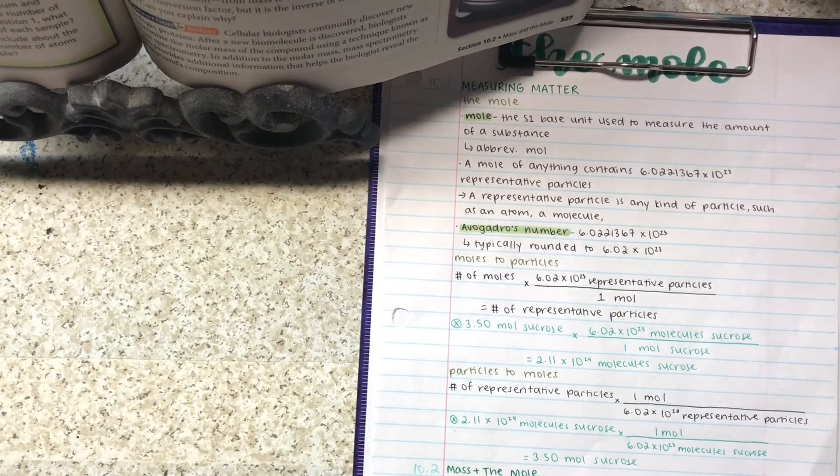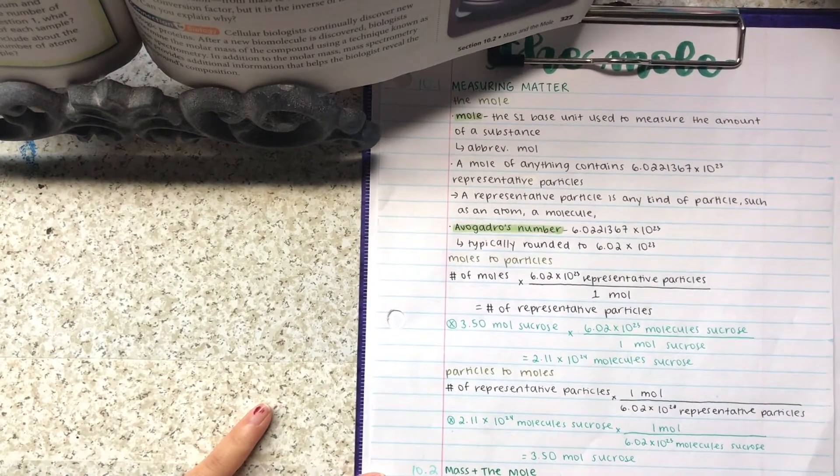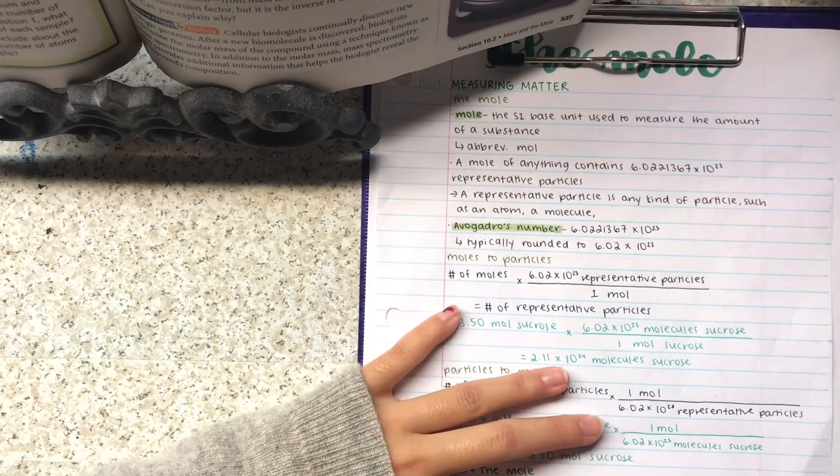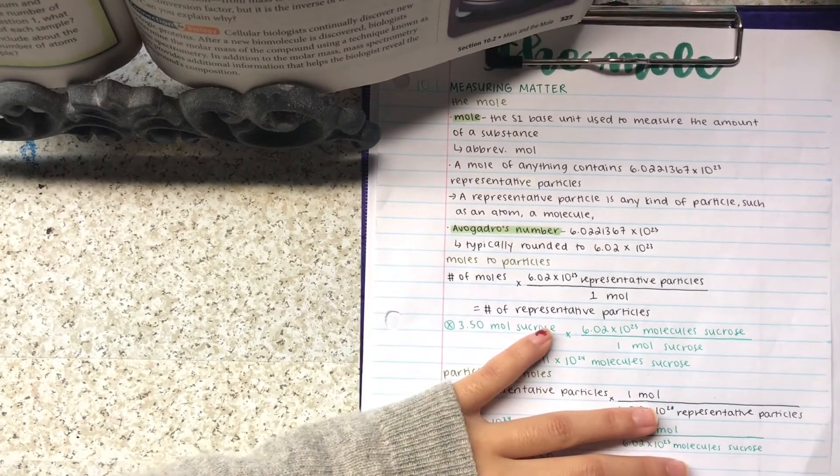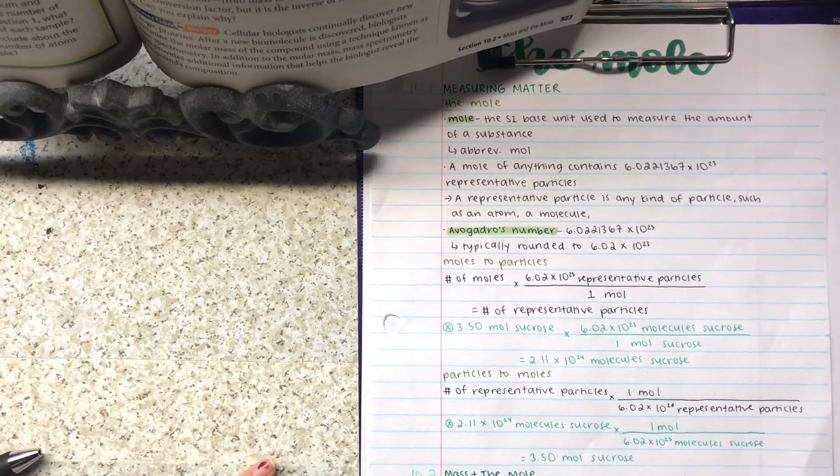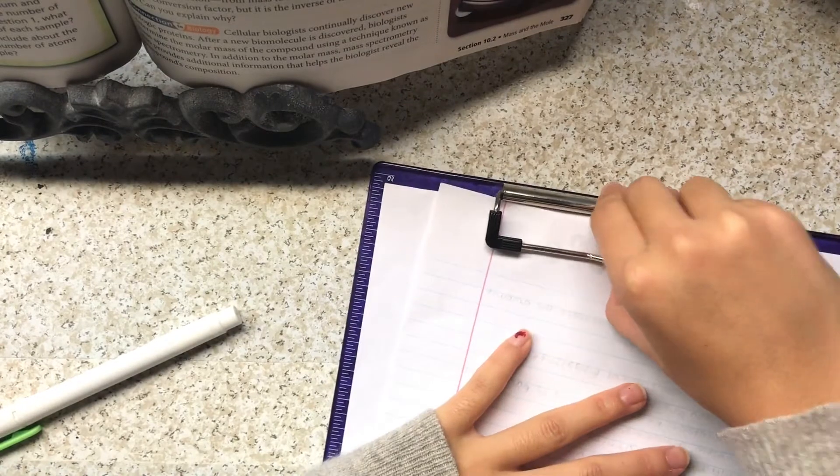And to denote the section number like 10 point whatever, I used the aqua colored fineliner. And I did use a Mildliner, however I used the green color. And yeah, so that is it for the supplies.